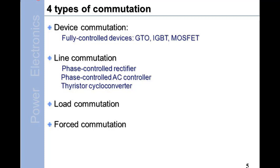Types of commutation: Device commutation for fully controlled devices (GTO, IGBT, MOSFET). Line commutation: phase controlled rectifier, phase controlled AC controller, thyristor cyclo-converter. Load commutation.